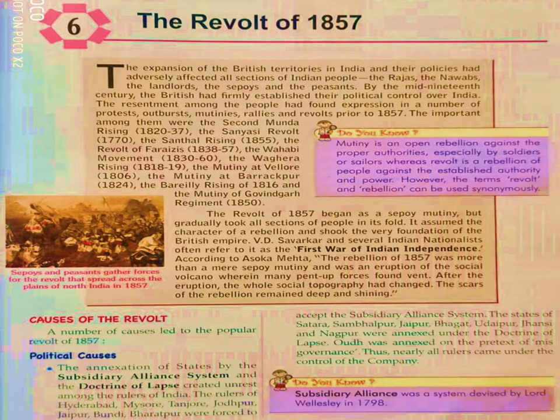The expansion of British territories in India and their policies had adversely affected all sections of Indian people — whether it is the Raja, the Nawabs, the landlords, the sepoys, the peasants — everyone was adversely affected. The Britishers came to India for trade purpose, but later on, by the mid-19th century, they formally established their political control.